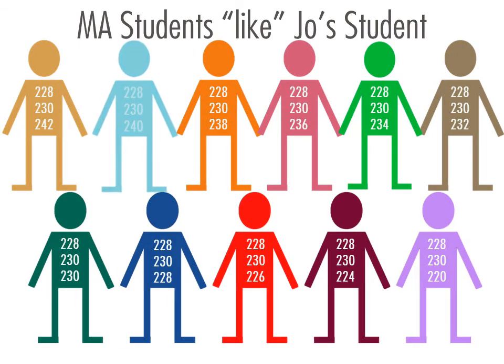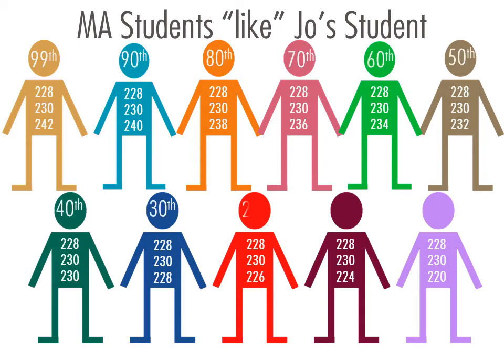Joe Schmoe's student had the second largest improvement. Each student is assigned a percentile score. The student from Joe Schmoe's class is in the 90th percentile — his score this year went up from 230 to 240, an improvement that was as good as or better than 90 percent of his test score peers.